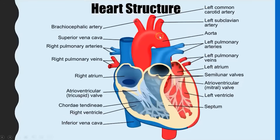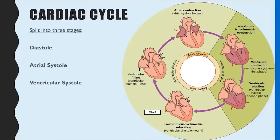In the last video we went through the structures of the heart — the four chambers, the four major blood vessels, and the valves. Of particular importance for this video will be the valves and the thickness of the muscular walls. The cardiac cycle looks at the pressure and volume changes within the heart and how they control the opening and closing of the valves. I'm going to split it into three key stages: diastole, atrial systole, and ventricular systole.